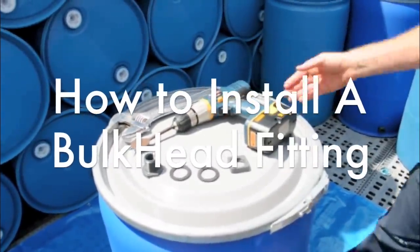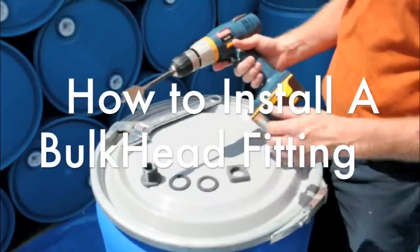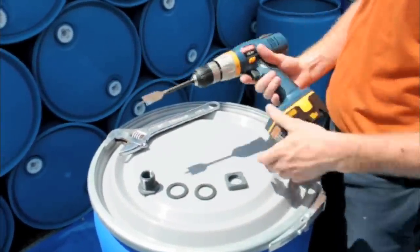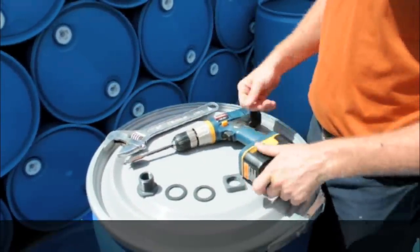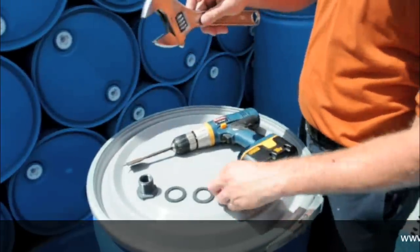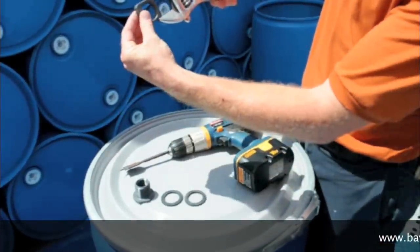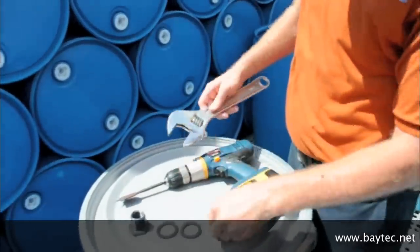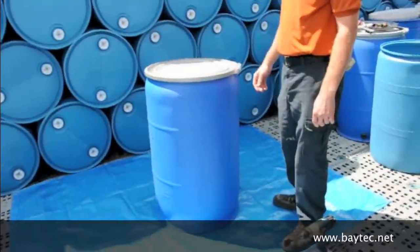This instructional video will teach you how to install a bulkhead fitting into a plastic drum. You will need a one and a quarter inch paddle bit with electric drill, a crescent wrench adjusted to fit the plastic outside nut, and of course the four part bulkhead fitting.